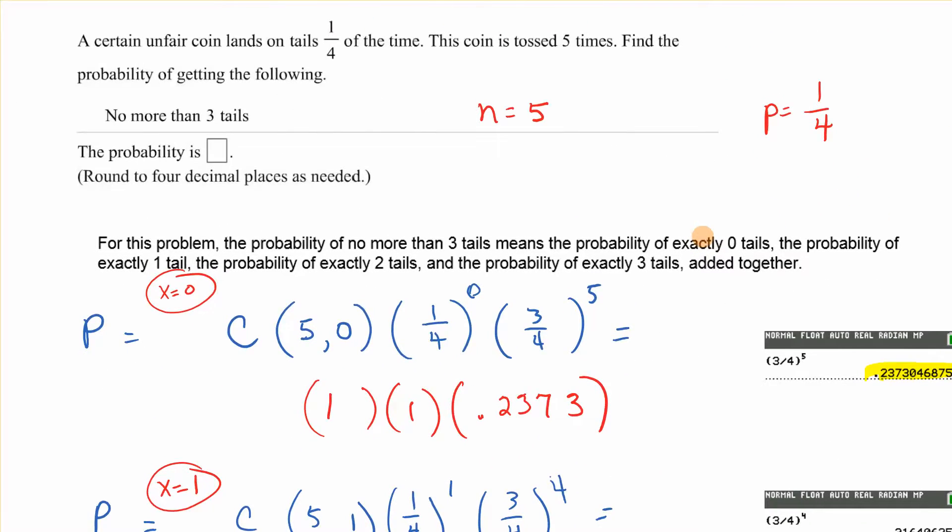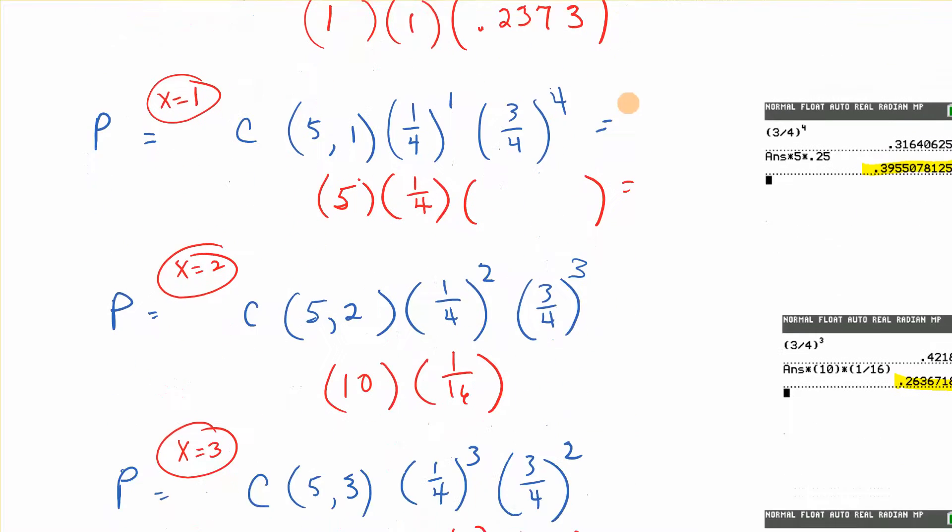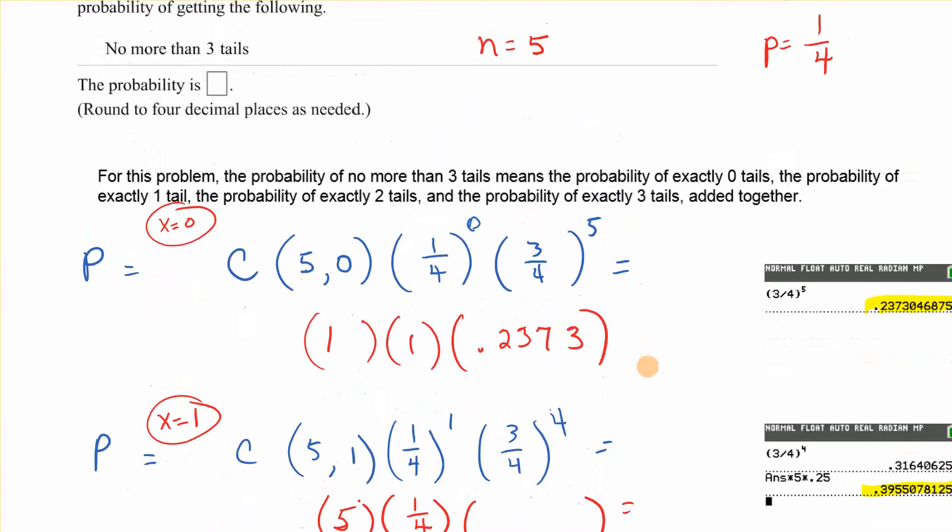A certain unfair coin lands on tails one fourth of the time and it's tossed five times. So n is 5, P is one fourth. Find the probability of getting no more than three tails. So we have a few things to do. Either x is zero, X is one, two, or three. So we've got to do this four times.